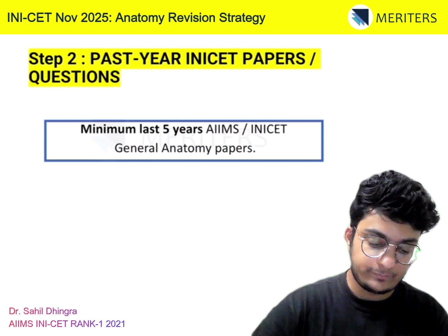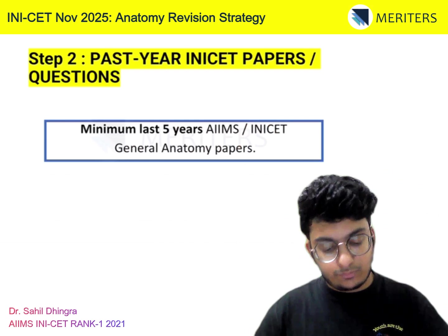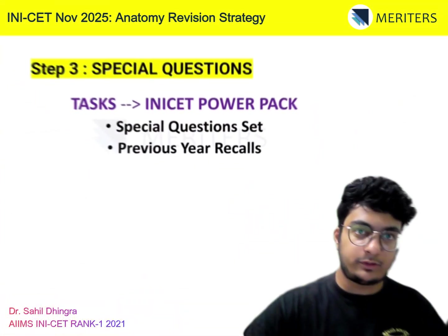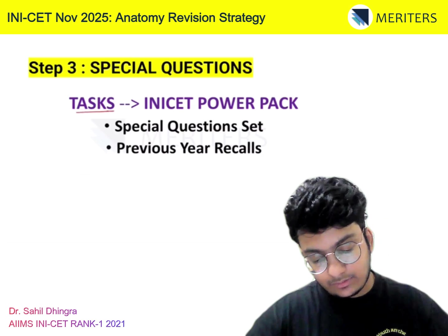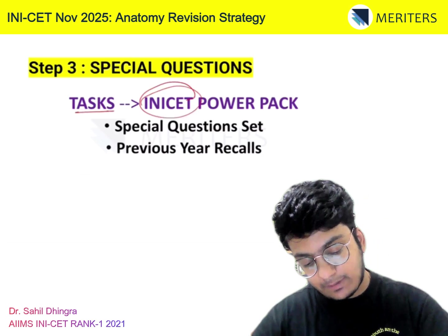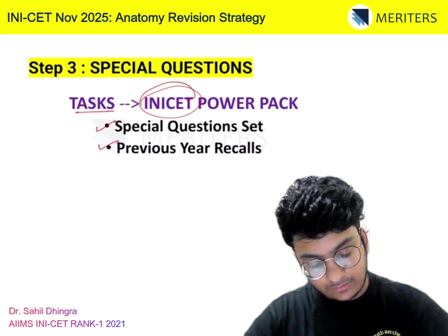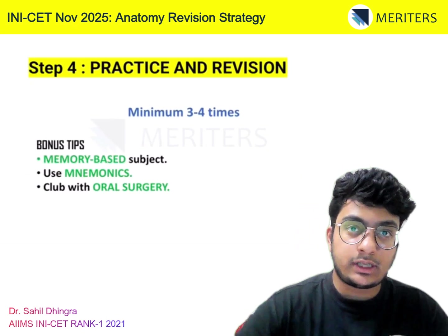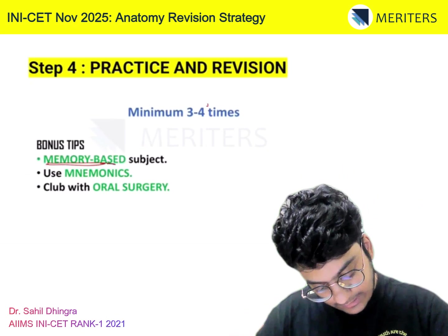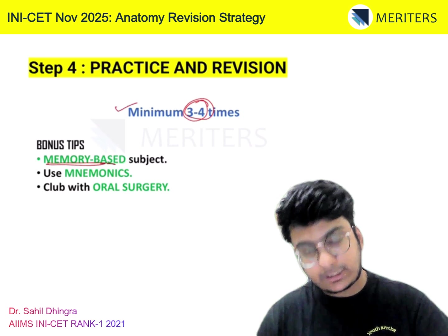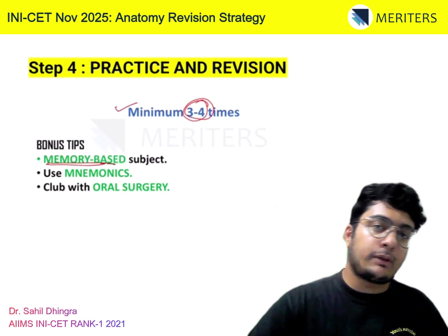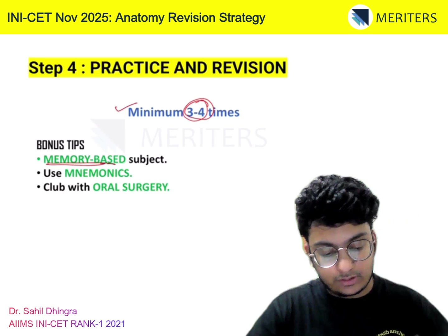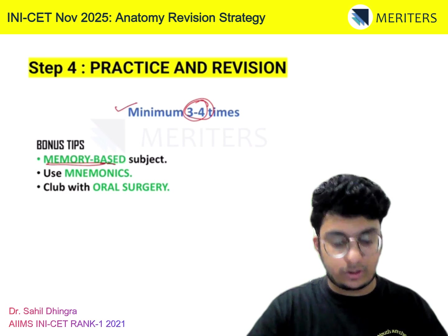The next step is past year papers. Devote one day to the last 5 years of INICET papers for anatomy specifically — that's your last 10 papers. Then go through special questions available in the INICET power pack tasks, including previous year recalls. Anatomy is a memory-based subject, which means you need a minimum of 3 to 4 revisions, sometimes even more, because there is a lot of memorization — names of muscles, nerves, and which structure they supply.